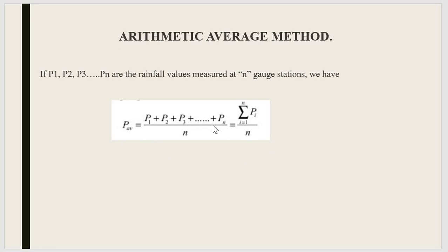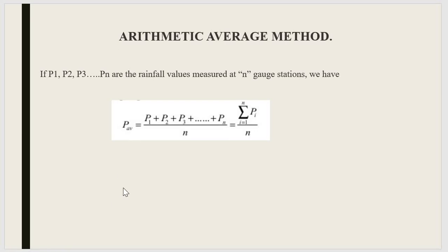P1, P2, P3 till Pn are the respective rainfalls of each station — the rainfall from the first station, the second station, and up to the nth station — everything divided by the total number of stations. So if you have 10 stations, it will be divided by 10. Thus, ΣPi/n gives the average precipitation of that area. The main advantage of this method is that it is best suitable when the rainfall is very uniform in all places.